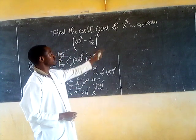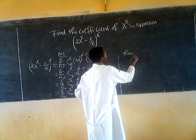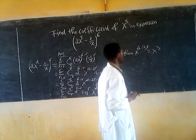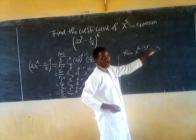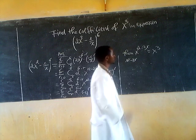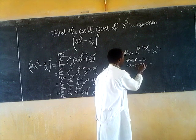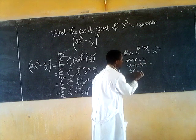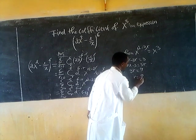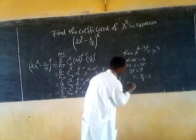In our question we need the coefficient of x power 3. So we take x to the power 12 minus 3r and set it equal to x power 3. Since the bases are the same, we equate the exponents: 12 minus 3r equals 3, so 3r equals 9, and therefore r equals 3.